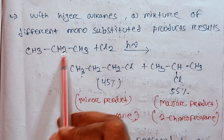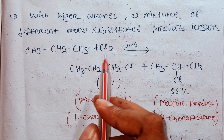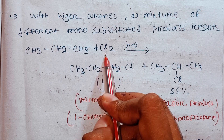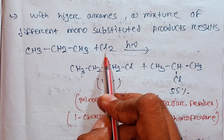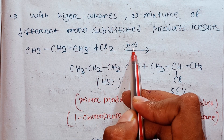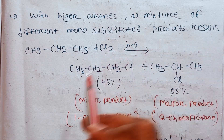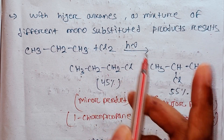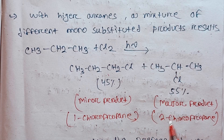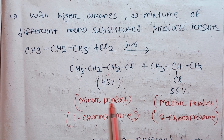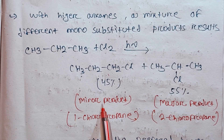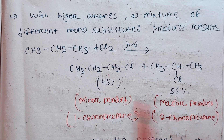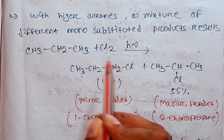So the higher alkyl halogen treated with chlorine in the presence of sunlight — what is the type of product? Which is the minor and which is the major? What is the type of minor or major product, which consists of the chlorines?